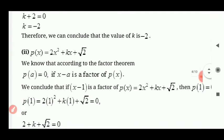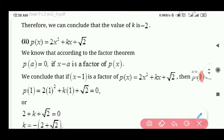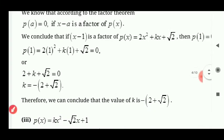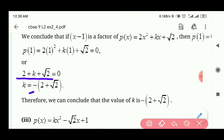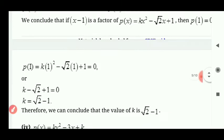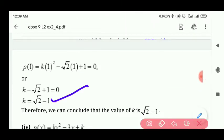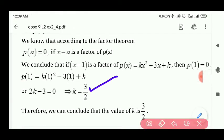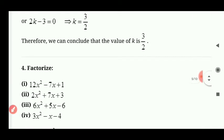हर बार x is equal to 1 की value डालनी है। दूसरे equation में k के साथ x था तो 1 की value वहाँ भी डाल दी — equation बनके 2 plus k plus root 2 = 0, shift करने पर k is equal to minus of open bracket 2 plus root 2 close bracket। तीसरे में similarly k is equal to 2 root 2 minus 1 आता है। चौथे question में answer आता है k is equal to 3 by 2। सब जगह 1 ही place करना है।